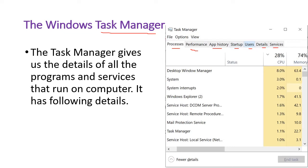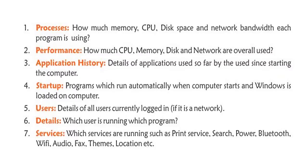Task Manager में निम्नलिखित tabs होते हैं: Processes, Performance, App History, Start-up, Users, Details, और Services। इनमें देख सकते हैं कि कौन-कौन से processes run हो रहे हैं, CPU का कितना use हो रहा है, और memory का कितना use हो रहा है। पहला tab है Processes।